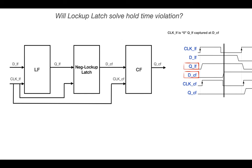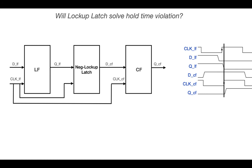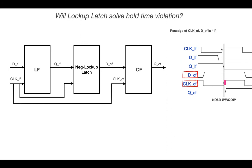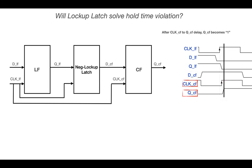When the launch flop's clock goes low, the lockup latch becomes transparent and the D-pin of the lockup latch transitions from 0 to 1. At the next positive clock edge, the D-pin of the launch flop transitions from 1 to 0, and it is captured at the Q-pin after clock-to-Q delay. Again, the output of the negative level-trigger lockup latch, which acts as input to the capture flop, does not change because the clock is high — it remains stable at 1 throughout the hold window of the capture flop. So after clock-to-Q delay, 1 is reliably captured at the Q-pin of the capture flop.